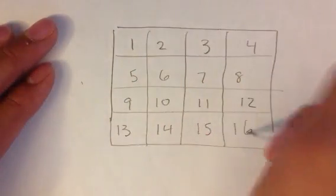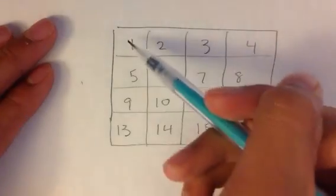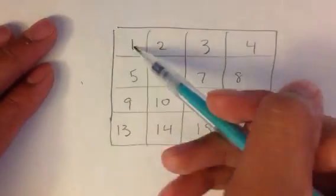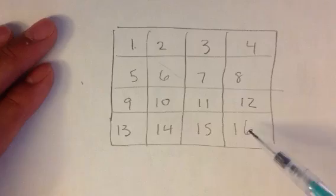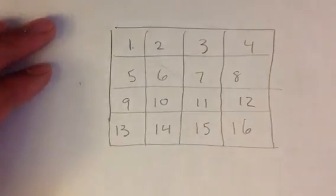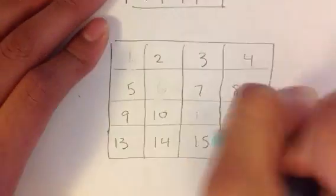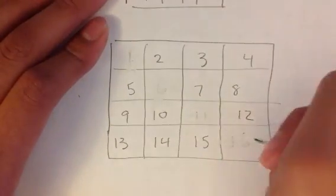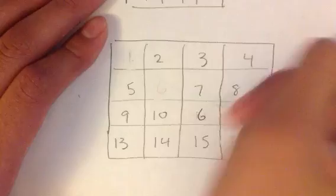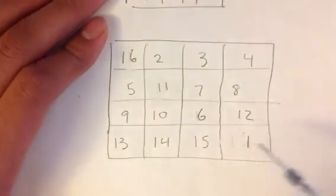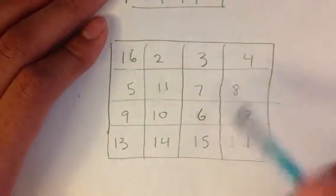Next, you take the first diagonal you see: 1, 6, 11, 16. We are going to flip this around, so it goes 16, 11, 6, 1. You're going to erase these numbers, so now they're backwards.